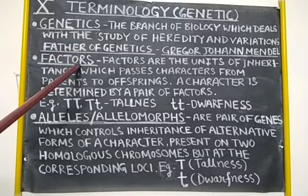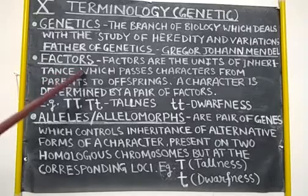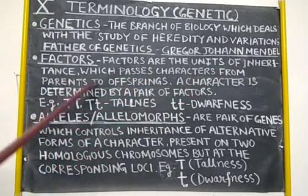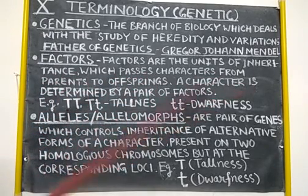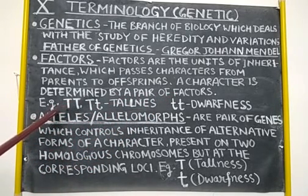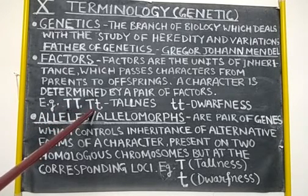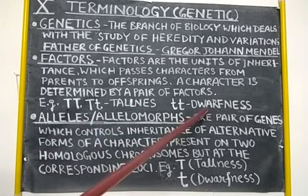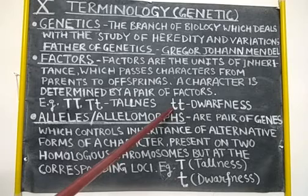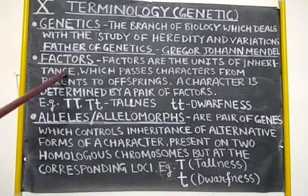Next, factors, which are also known as Mendelian factors. They are the units of inheritance which pass characters from parents to offspring. A character is determined by a pair of factors. For example, for the character height: tallness can be inherited by a pair of factors capital T capital T, or capital T small t, whereas dwarfness can only be inherited by a pair of factors small t and small t. These factors are known as genes.